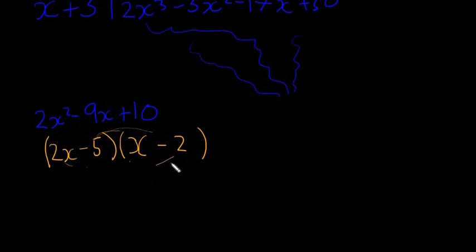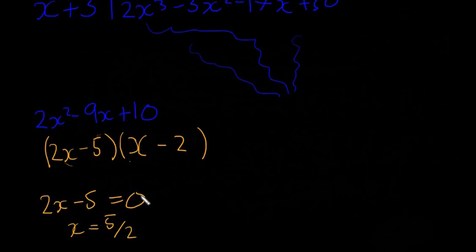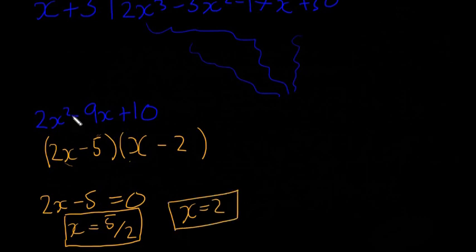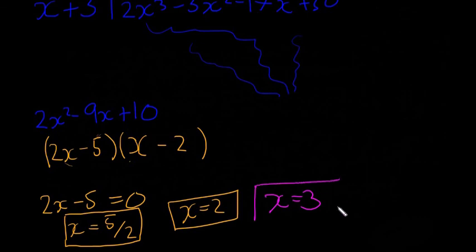So we now have all three factors. From (2x - 5) = 0, we get x = 5/2 (or 2.5). From (x - 2) = 0, we get x = 2. And our first root from trial and error was x = -3. So the three roots of our cubic equation are x = -3, x = 2, and x = 5/2.